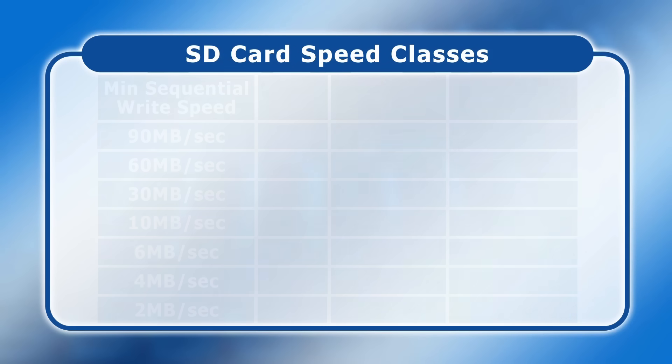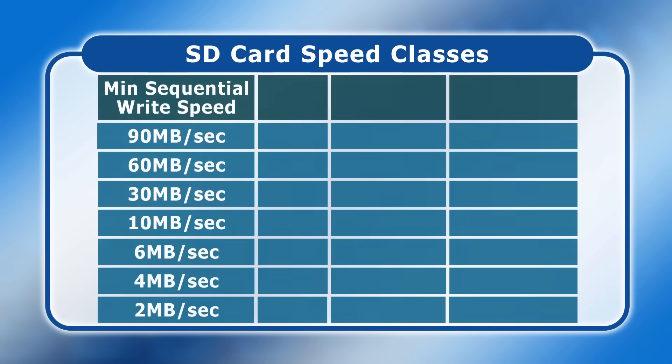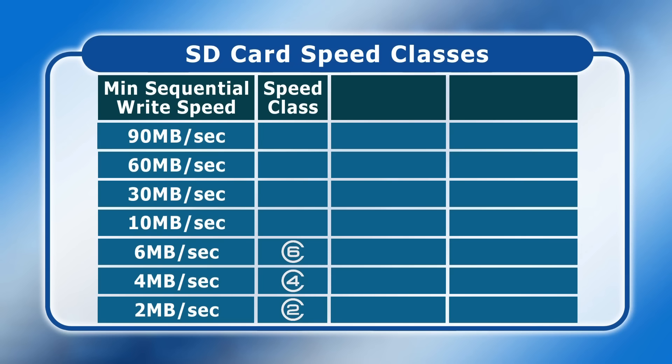SD cards may be labelled with up to four different speed classes, all of which indicate the minimum sequential write speed that a card is capable of. The first SD cards were class 2, class 4, class 6, or class 10, with the number appearing in a letter C, and the class indicating a minimum write speed of 2, 4, 6, or 10 megabytes per second.